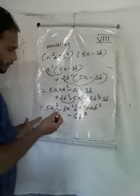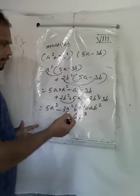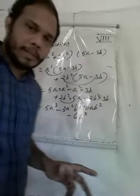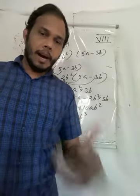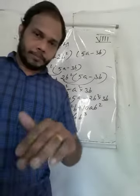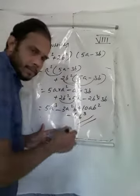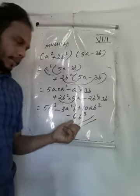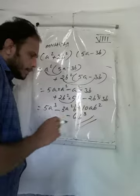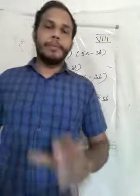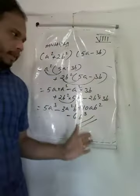Now checking for like terms: 5a cubed — no other a cubed terms. Next, 3a squared b — no other a squared b terms. Then 10ab squared — unlike terms. And 6b cubed — no other b cubed terms. So our final product is 5a cubed minus 3a squared b plus 10ab squared minus 6b cubed.